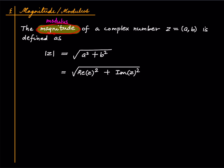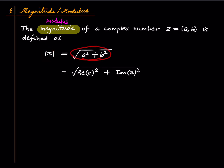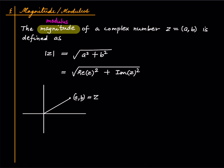Now we define the magnitude or modulus of a complex number Z. If Z equals a comma b, the notation for the magnitude is |Z|, and it is defined as the square root of (a squared plus b squared). The geometric interpretation is clear: if we have the complex number a comma b, this is simply the distance from the origin — just apply the Pythagorean theorem. a squared plus b squared is the square of the hypotenuse.